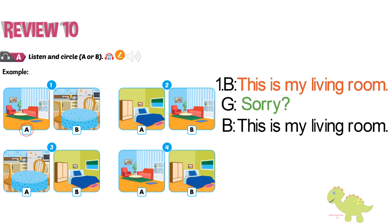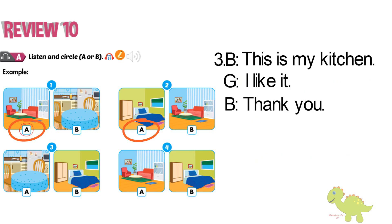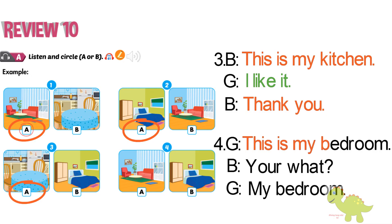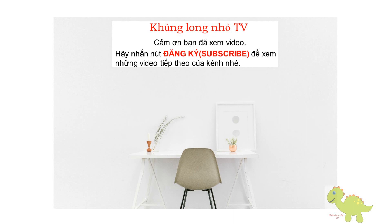Now listen again. Review 10. A. Listen and circle A or B. 1. This is my living room. Sorry? This is my living room. 2. This is my bedroom. Wow. It's nice. 3. This is my kitchen. I like it. Thank you. 4. This is my bedroom. Your what? My bedroom. Now listen again. This is my bedroom.